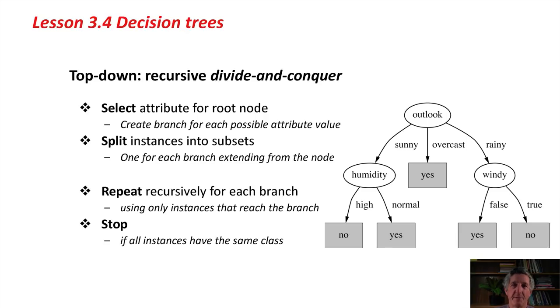At the end, you stop. Perhaps you might continue until all instances have the same class. The trick is, the question is, how do you do the selection? How do you select a good attribute for the root node?